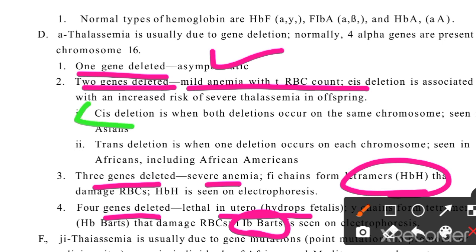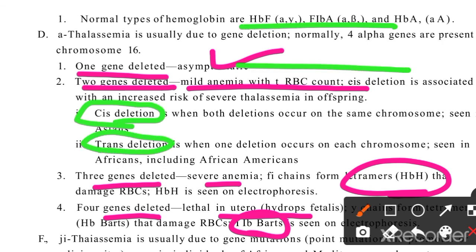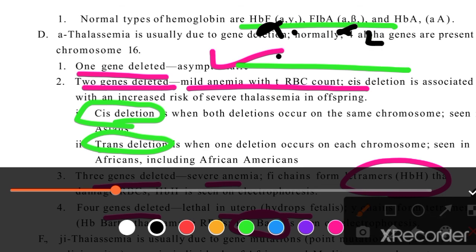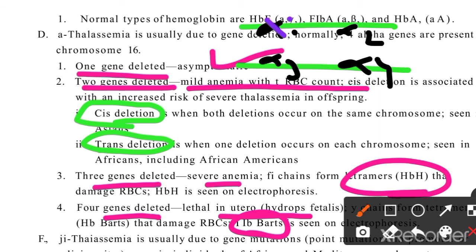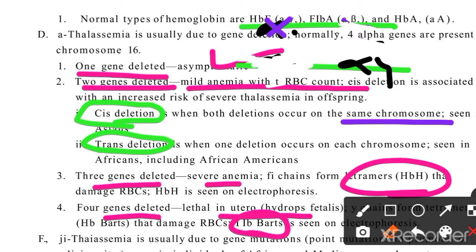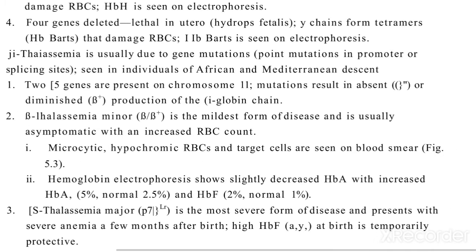Now regarding cis versus trans deletions: in cis deletions, both deleted genes are on the same chromosome. In trans deletions, the deleted genes are on opposite chromosomes. Cis deletions are most common in Asians including people from Pakistan and India. Trans deletions are more common in Africans and African-Americans. This genetic difference has clinical implications for the risk of severe disease in offspring.